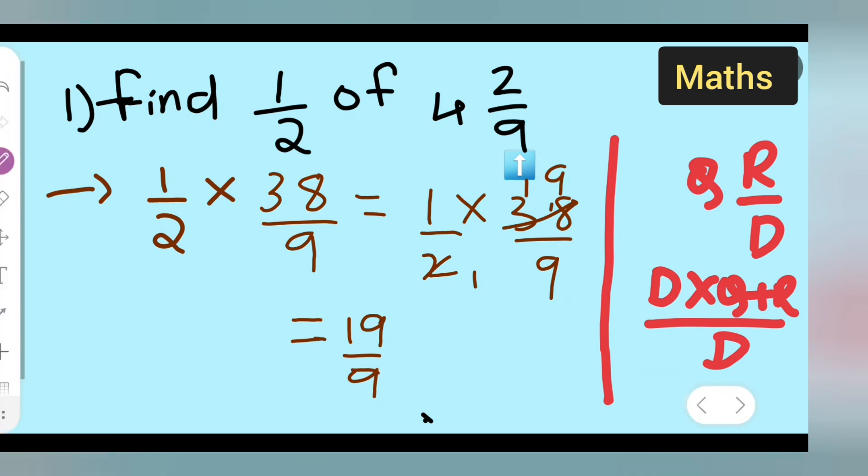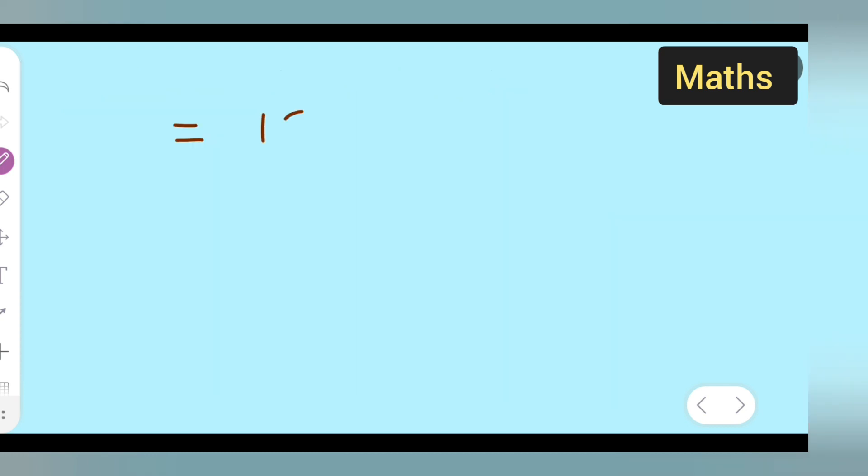So, now you all have to write it in a mixed fraction form. 19 upon 9. You all have to divide it now. Divide this. Here it will be 9. Here it will be 19. So, 9 2s you will get 18. So, 1 is left. Now, this is your quotient. This is your remainder. And this is your dividend. So, it is in the form of Q, R upon D.